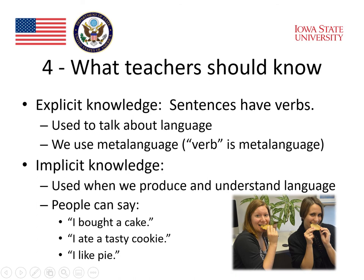The distinction between explicit knowledge and implicit knowledge is extremely important for teaching. Explicit knowledge means that you have the knowledge you need to talk about language, so you can say things like 'sentences have verbs' — a statement we could make about language. It is used to talk about language, and so it's called meta-language. 'Meta' means above or outside of language, so the word 'verb' itself is an example of meta-language.